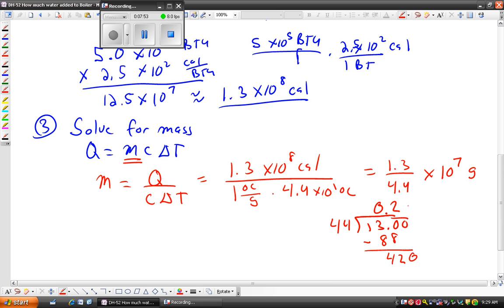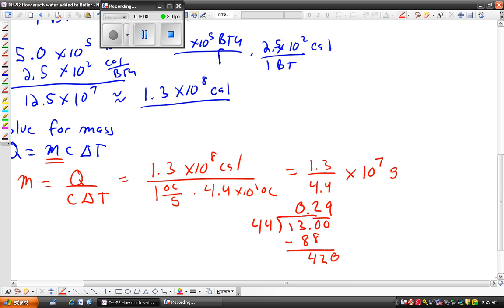Bring down the 0. You can see that this is 9. And then you could do this a step further. But let's actually just stop here and leave this at 0.29 times 10 to the 7, which is the same as 2.9. Remember this gets bigger, so this has to get smaller, times this power has to get smaller, times 10 to the 6 grams.